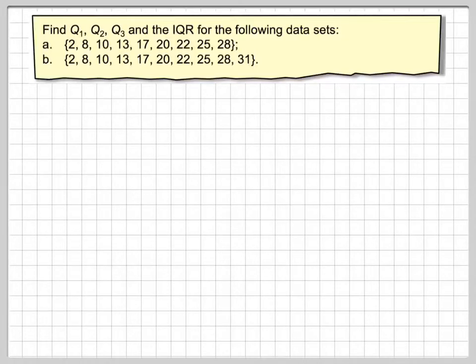Right, in this video we're going to find Q1, Q2, Q3, and IQR for the following data sets. We've got one data set where the number of terms is odd and we've got the other data set where we have one more term, so the number of terms n is even.